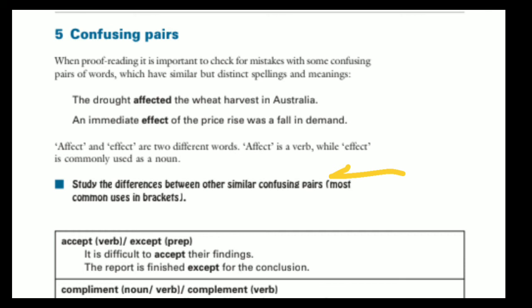Confusing pairs. When proof-reading, it is important to check for mistakes with some confusing pairs of words which have similar but distinct spelling and meanings. The drought affected the wheat harvest in Australia. An immediate effect of the price rise was a fall in demand. Affect and effect are two different words. Affect is commonly used as a verb, while effect is commonly used as a noun.